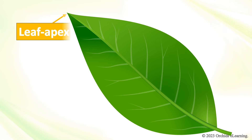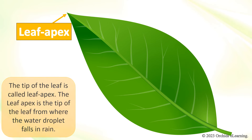Leaf Apex. The tip of the leaf is called the leaf apex. The leaf apex is the tip of the leaf from where the water droplet falls in rain.